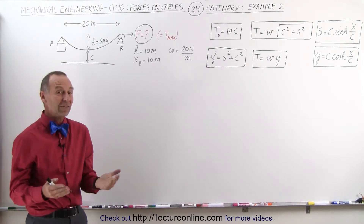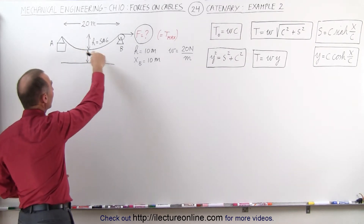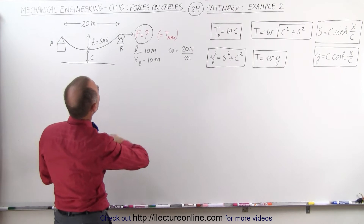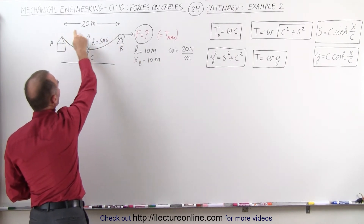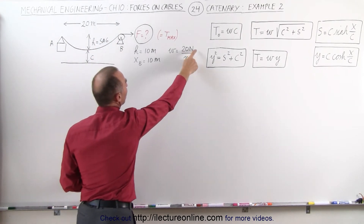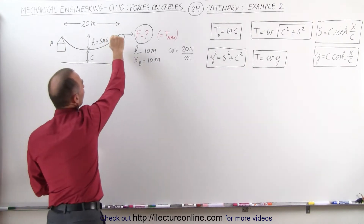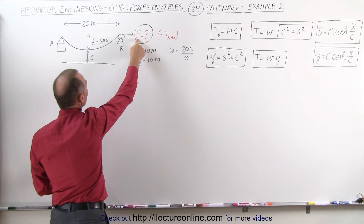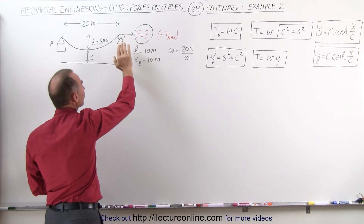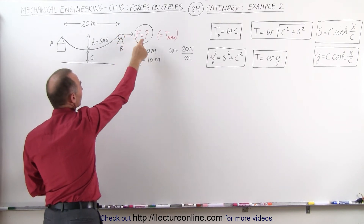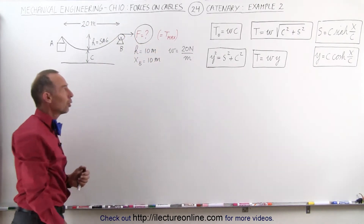Welcome to Electronline. Here's our second example of how to solve a catenary problem. We have a cable hanging under its own weight with a sag of 10 meters, and the total distance between support points is 20 meters. The cable weighs 20 newtons per meter, and we're trying to find the force required to pull on the cable — which equals the maximum tension at that location, since the pulley changes direction of force.